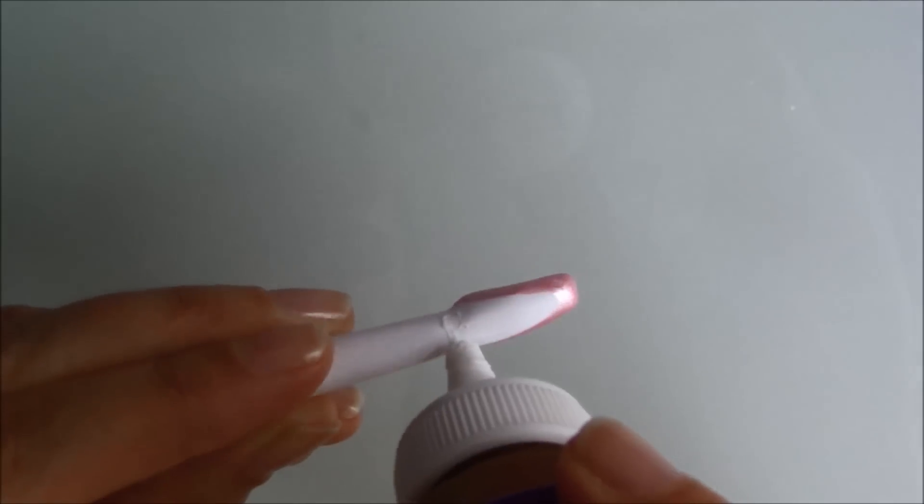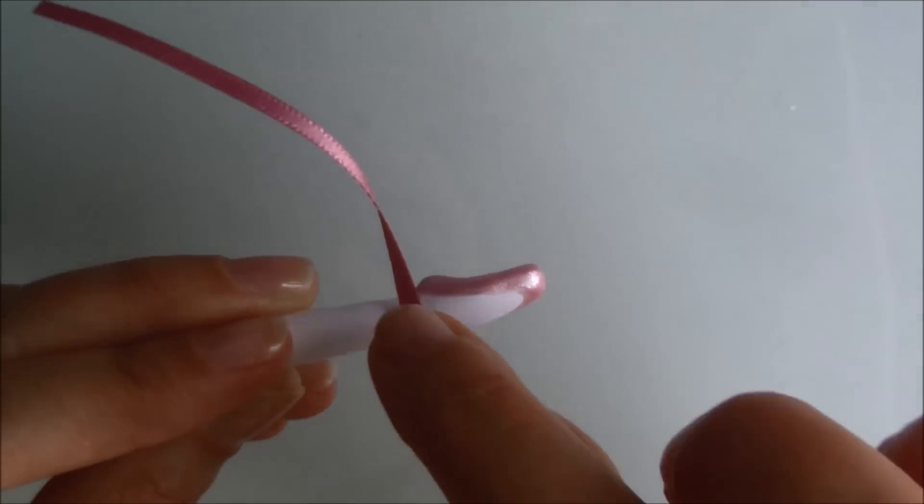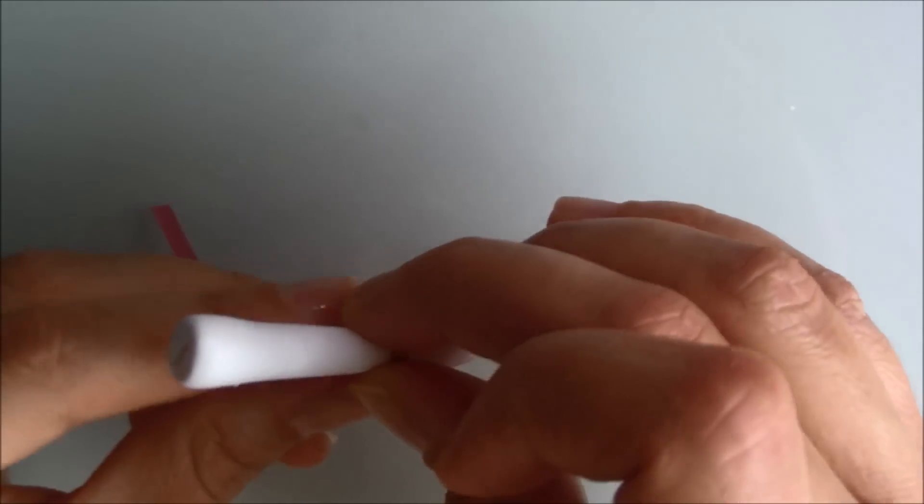Let that dry and then glue pink ribbon to the front first, then glue it as you wrap it around the leg.